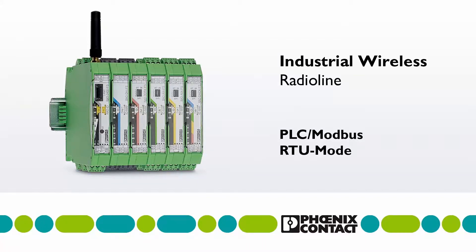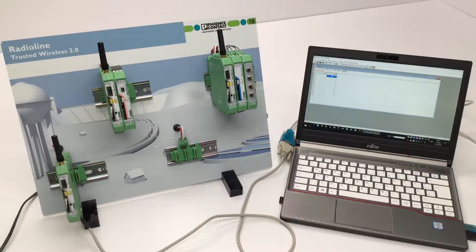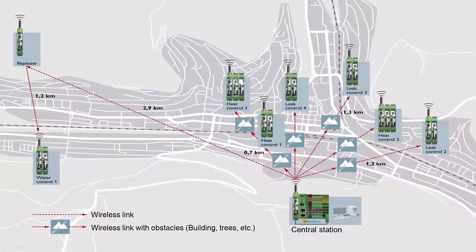This video will provide an overview of the Radioline PLC Modbus RTU mode, which allows you to read and write I/O signals using the Modbus RTU protocol. An example application would be if many sensors at several remote stations need to be monitored from a central control station. PLC Modbus RTU mode allows the user to integrate I/O signals directly into an existing control system using a communication protocol, saving hardware costs and installation time spent on wiring to the controller.